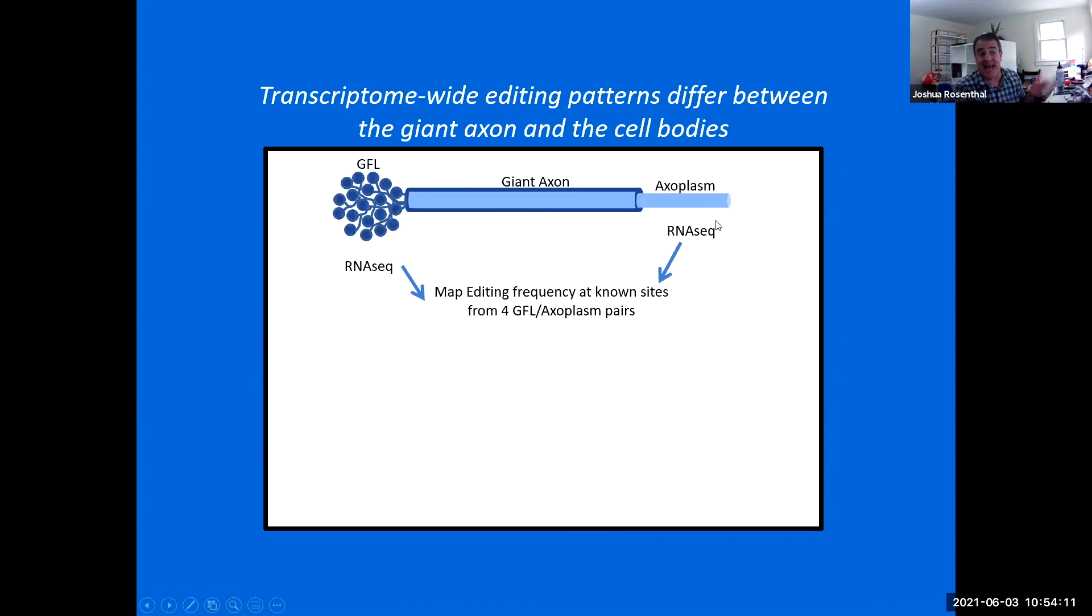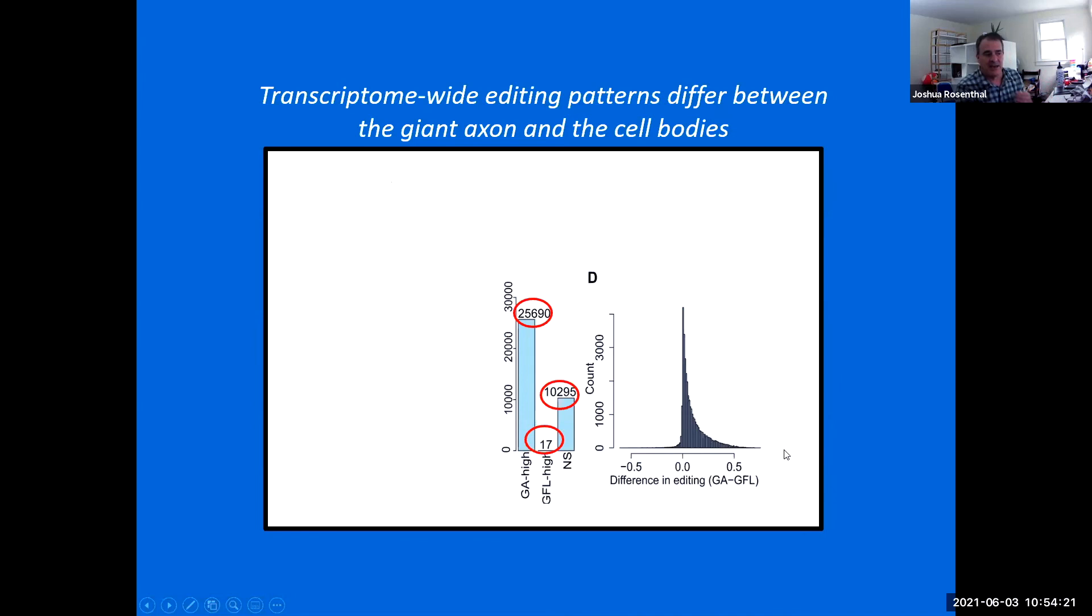When we squeeze out axoplasm, we can do an axoplasmic transcriptome wide editing analysis through RNA-seq and also compare that to the cell bodies where the nuclei are. And when we do that, we see that we have a very large number of editing sites that are edited more highly in axons, very small number that are edited more highly in the cell bodies and a group that is statistically unchanged. So we see ADAR outside of the nucleus, we see that editing sites in the same message when you isolate it from axons are more extensively edited very frequently than they are in the nucleus. This is giving us an indication that there could be local editing of messages.